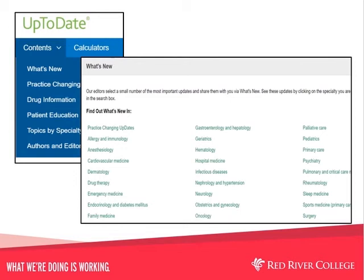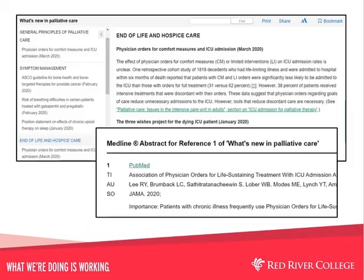What's New takes you to editor-selected content on a variety of specialties, all current within the last six months. You can find information on emergency medicine, oncology, rheumatology, and surgery, among many others. For example, if we click on What's New, then palliative care, we will see a familiar layout with the table of contents on the left and the text in the right window. As you click on each section, you will be taken to that point in the document. You can click through topic by topic or scroll through the entire document as you wish.